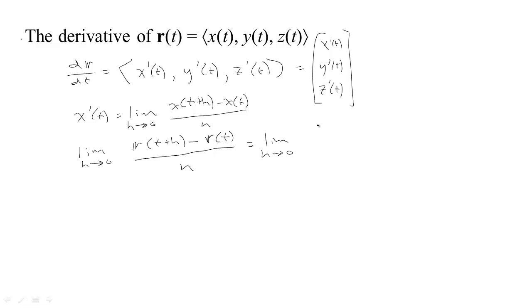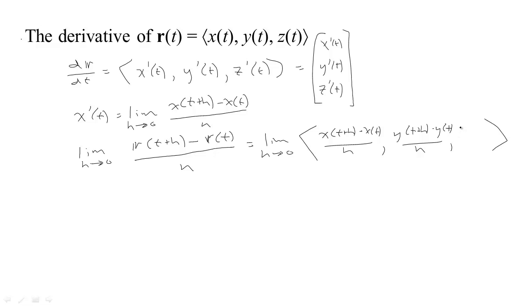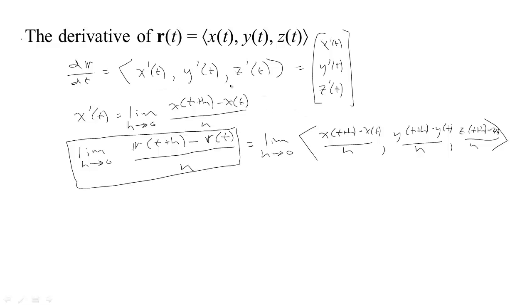If we subtract these components and divide like that, we've just got a big vector where we have X of T plus H minus X of T all over H, Y of T plus H minus Y of T all over H, and Z of T plus H minus Z of T all over H. This form is important — we can see that doing this is the same as just calculating the derivatives of the individual pieces.